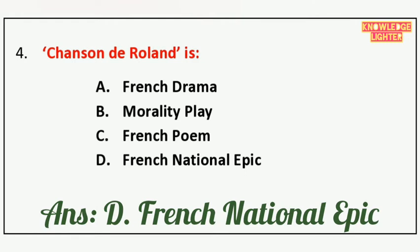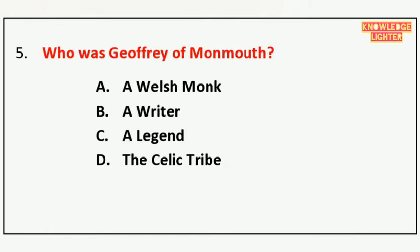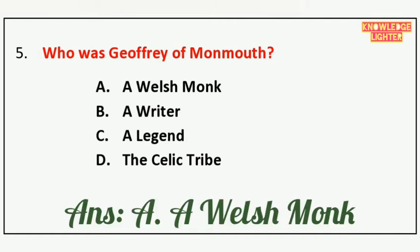Your next question is: Who was Geoffrey of Monmouth — option A a Welsh Monk, option B a writer, option C a legend, option D the Selic Tribe. And the correct answer is option A a Welsh Monk.